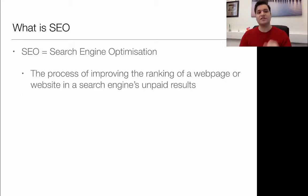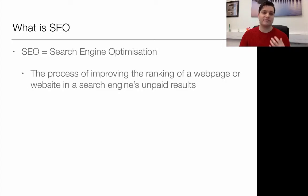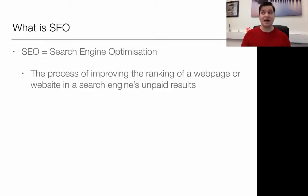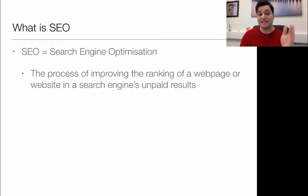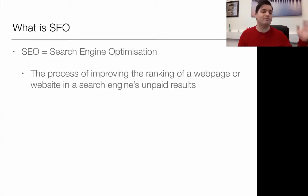SEO is short for search engine optimization, and it is the process of improving the ranking of a web page or website in search results. Basically, when you go on Google and search for 'emotional response,' it puts something near the top. Without good SEO, you will be down on page 3, 4, 5, or maybe 20.